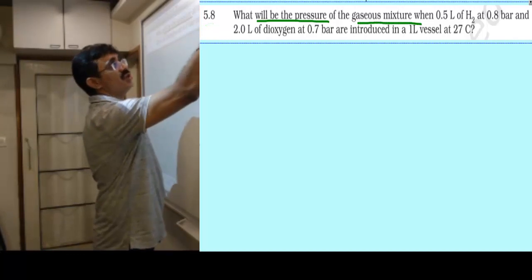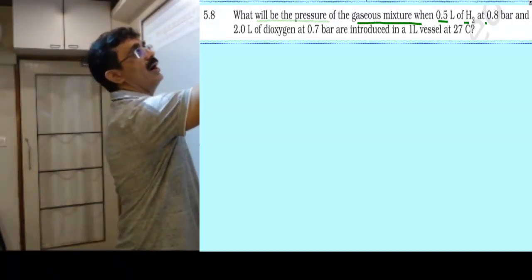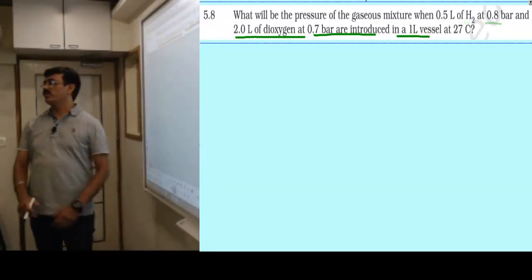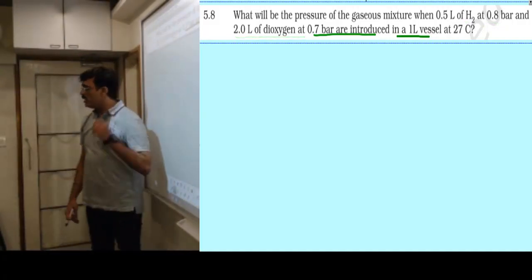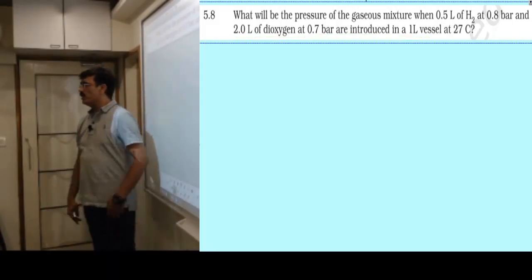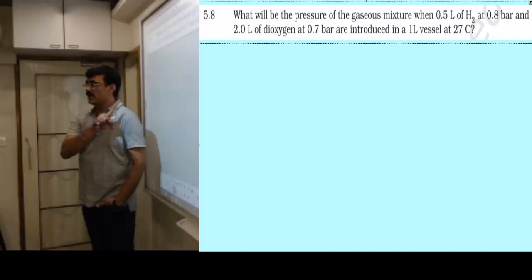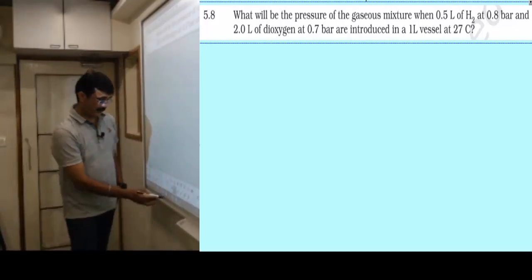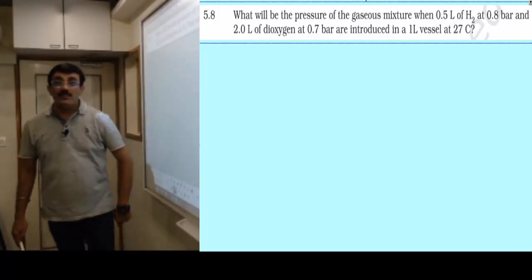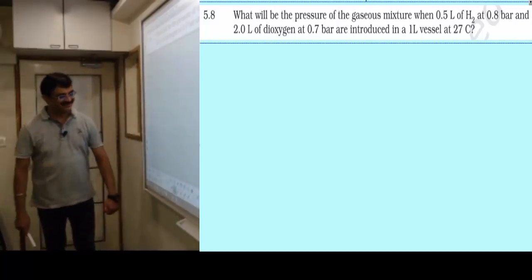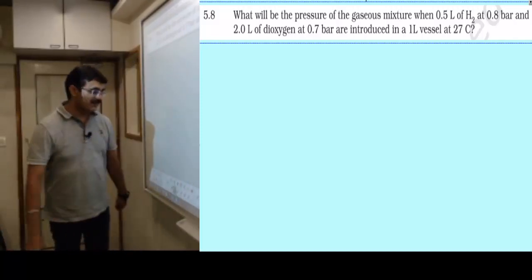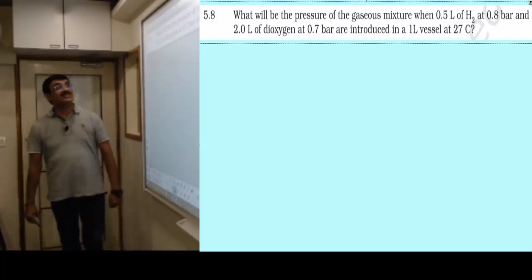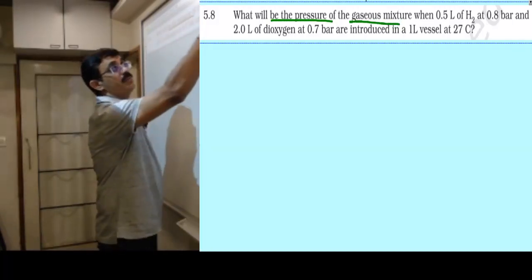Question 5.8 says: what will be the pressure of the gaseous mixture when 0.5 liter of hydrogen at 0.8 bar and 2 liter of dioxygen at 0.7 bar are introduced in a 1 liter vessel at 27 degree Celsius? Before I solve this, I want you to think about this question for two minutes and try to solve it on your own.